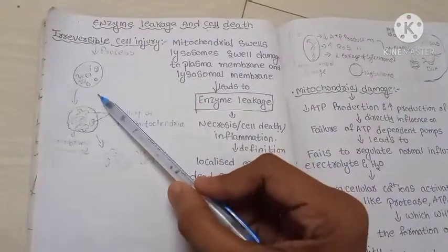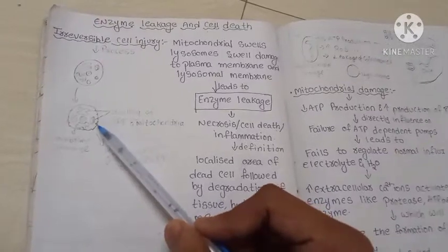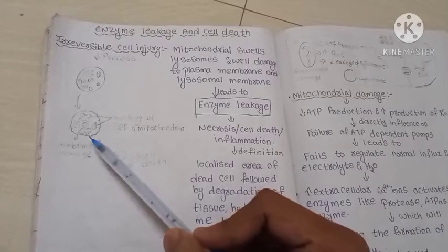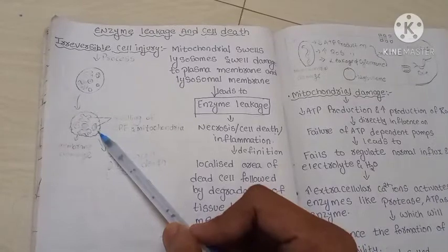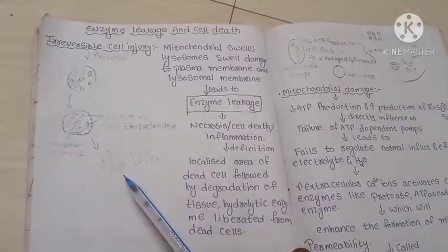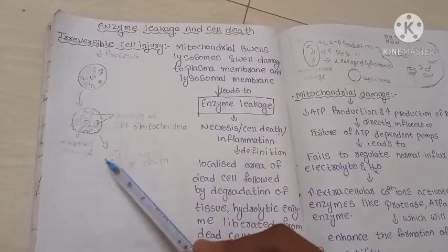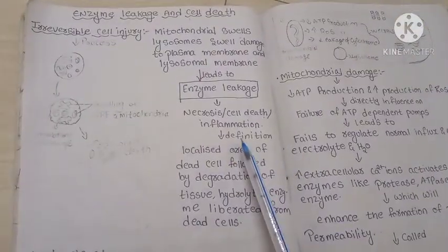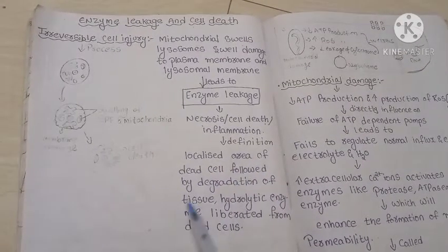Here you can see the image of a healthy cell, and here you can see the image of a destroyed cell, which contains an irregular cell membrane and swelling of mitochondria. In the next picture you can see the dead cell, which no longer has an intact cell membrane.